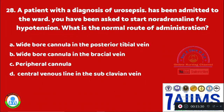Question 28: A patient with a diagnosis of urosepsis has been admitted to the ward. You have been asked to start noradrenaline for hypotension. What is the normal route of administration? Option A: wide-bore cannula in the posterior tibial vein. Option B: wide-bore cannula in the brachial vein. Option C: peripheral cannula. Option D: central venous line in the subclavian vein. The normal route of administration of noradrenaline in hypotension is Option C, peripheral cannula.